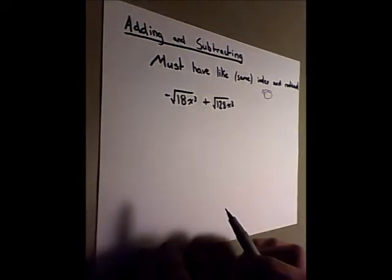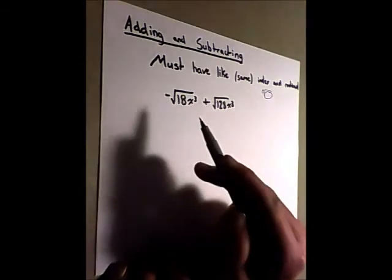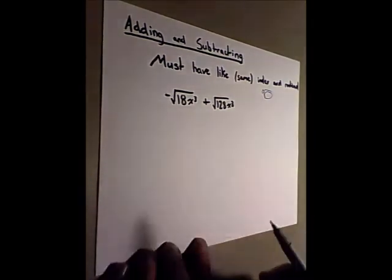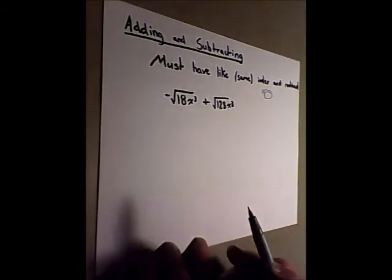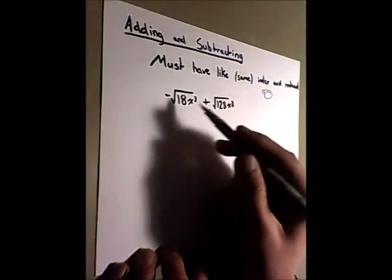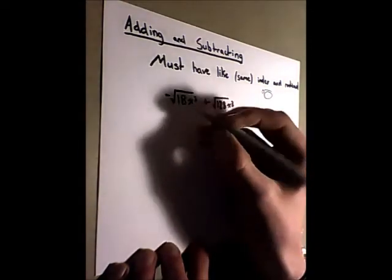So, to add and subtract these numbers, right now they have the same index but they don't have the same radicands. So we can convert these to simplest form to find that they do have the same radicands. So to do this, we simply convert this to a mixed radical.